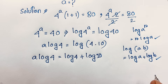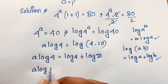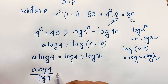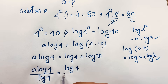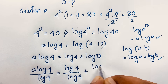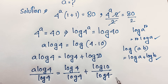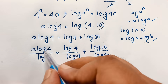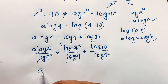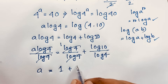Now I divide both sides by log 4. The log 4 on the left cancels out, and on the right we get (log 4 + log 10) over log 4. The log 4 over log 4 cancels to 1, so this expression gives a equals 1 plus log 10 over log 4.